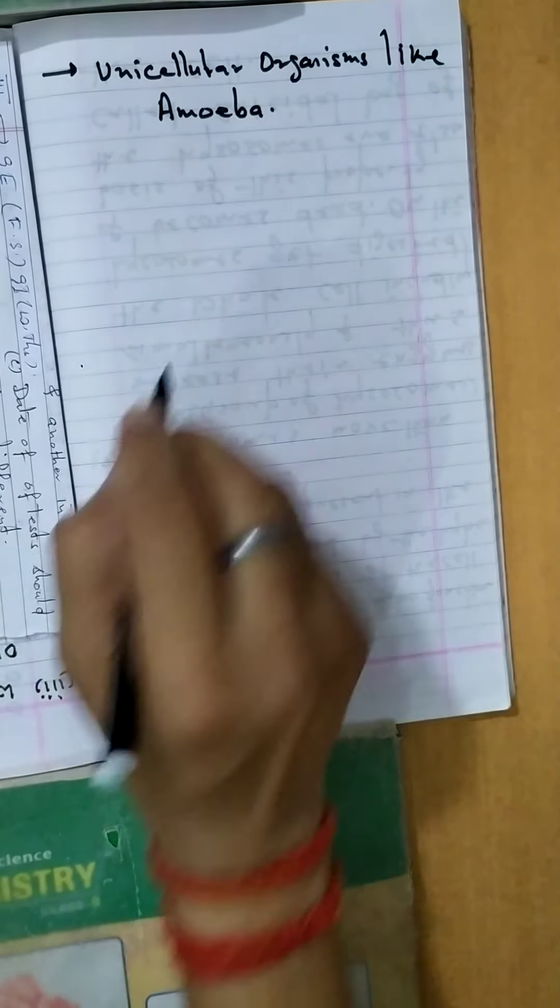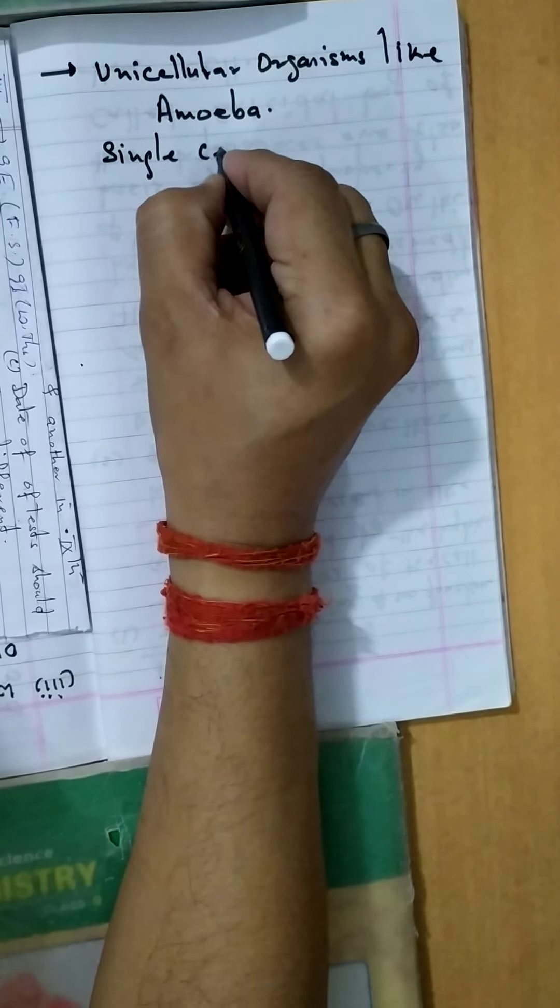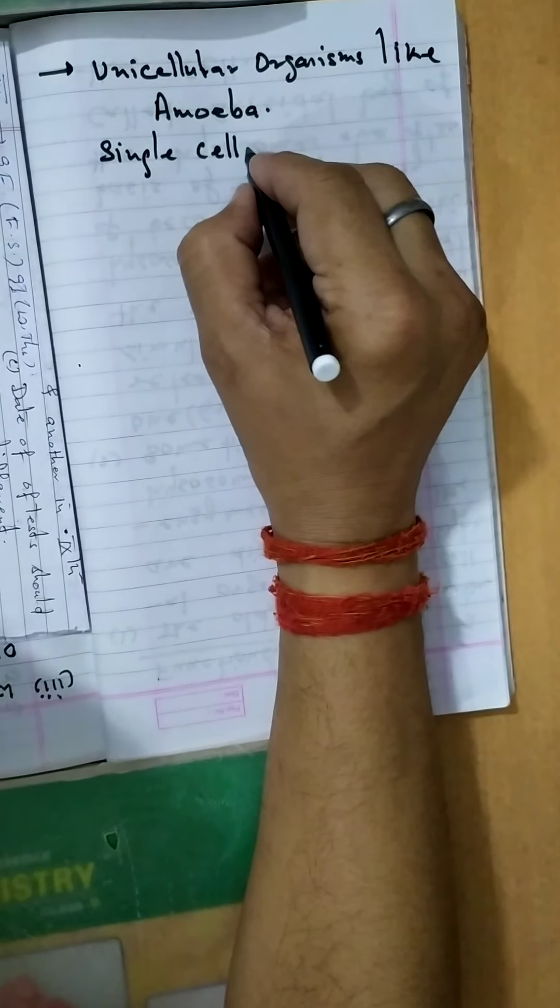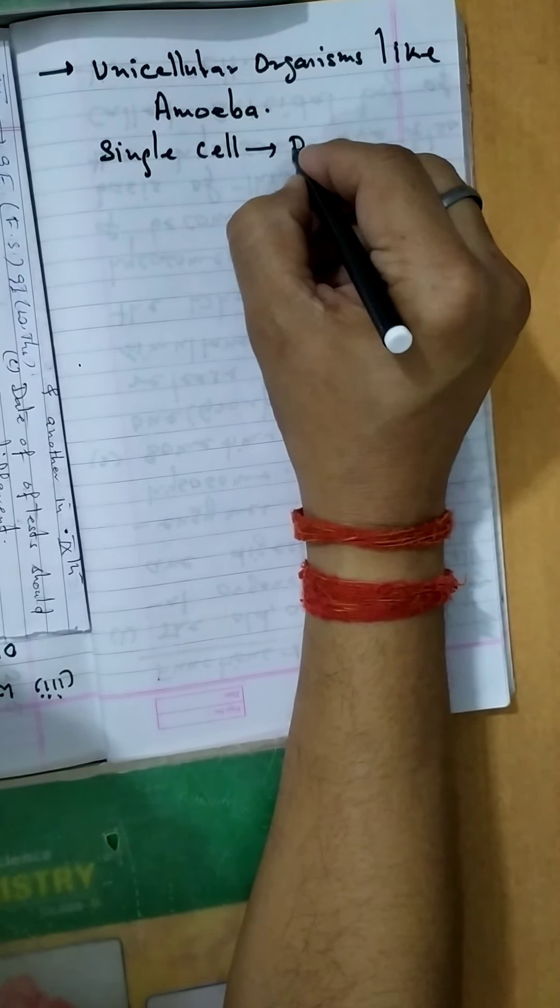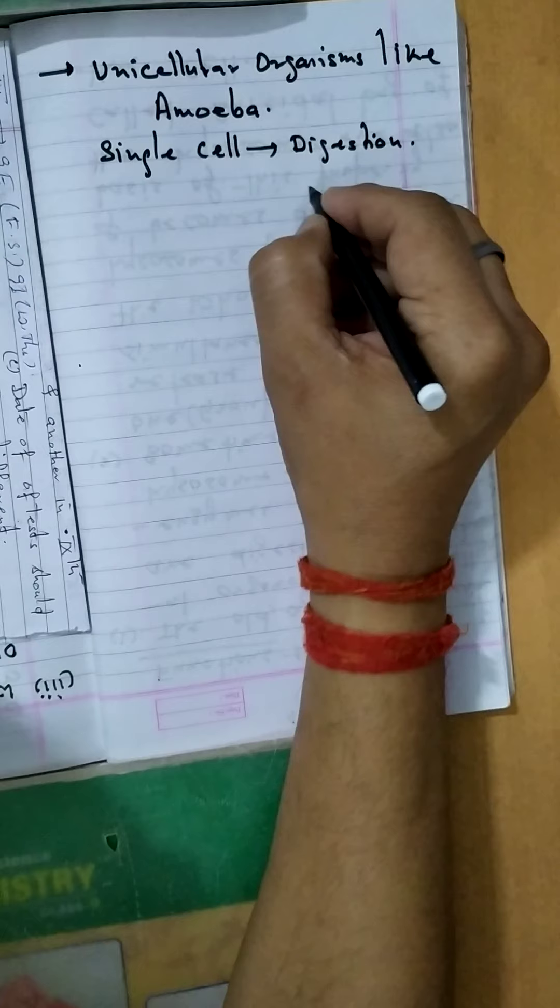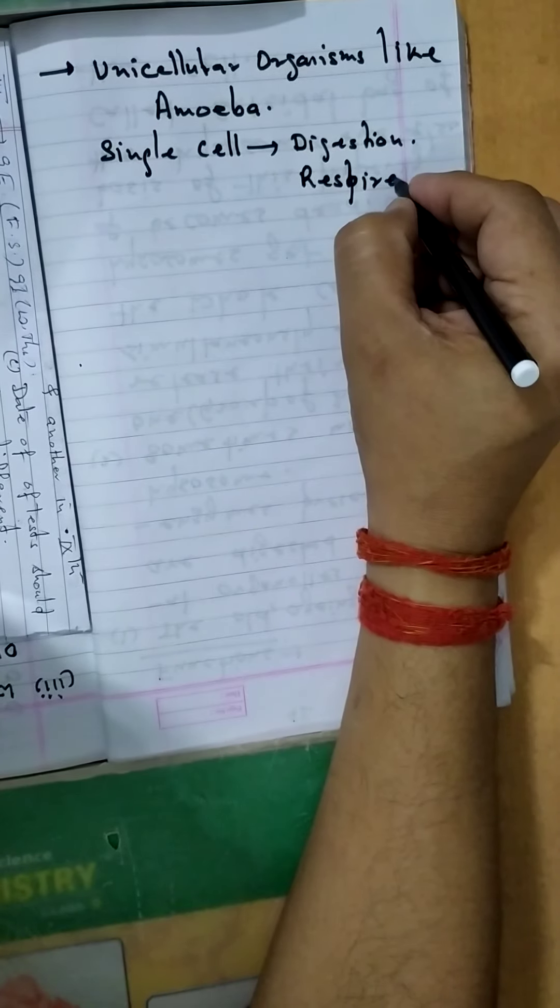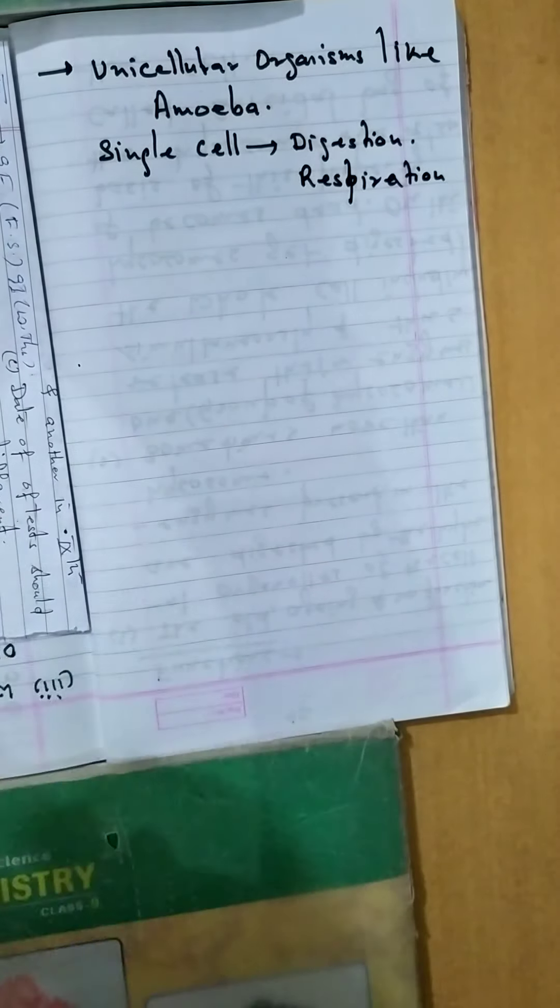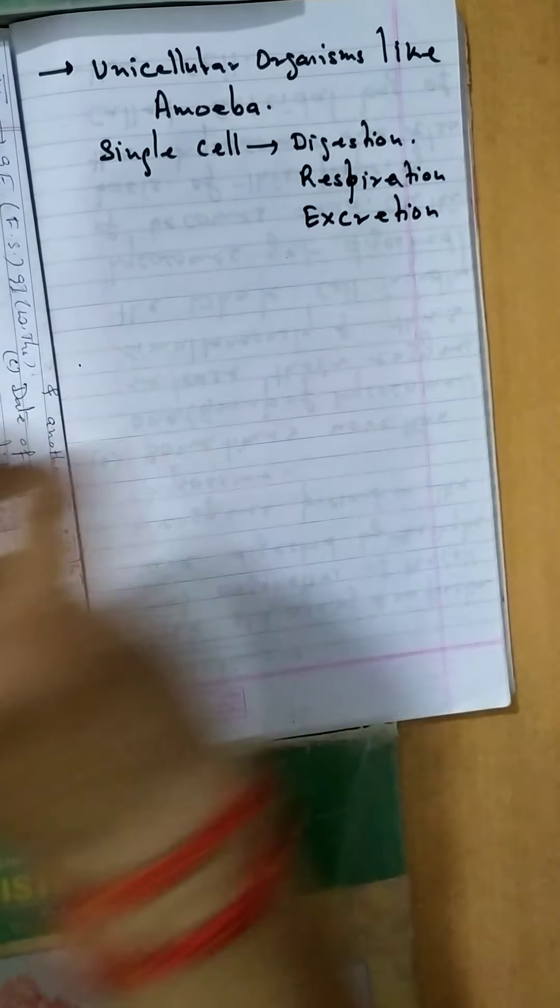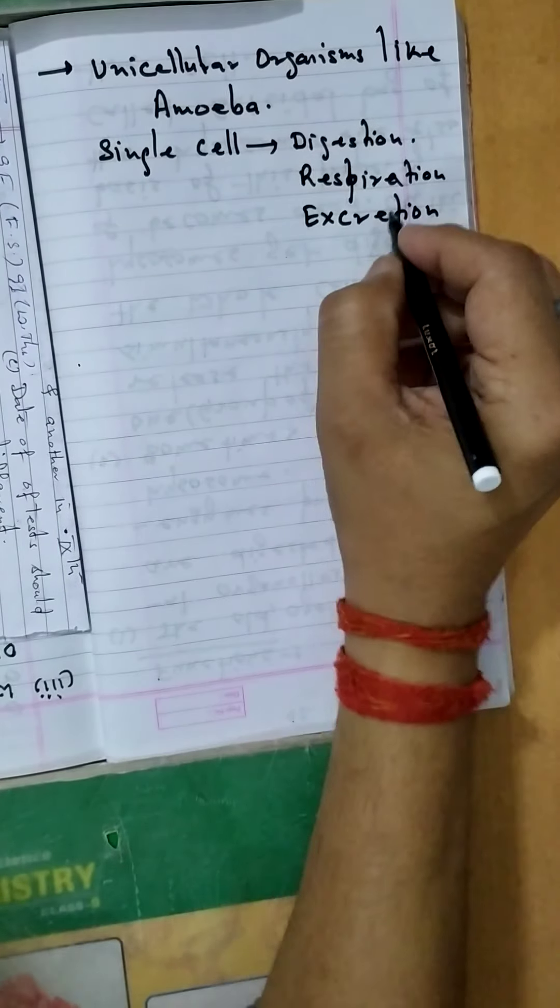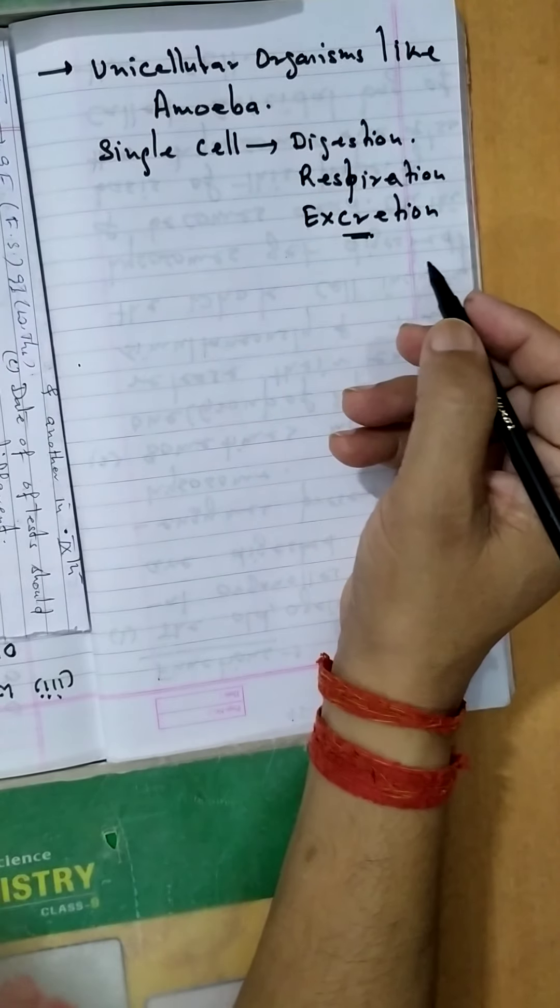In amoeba, there is single cell, where all the activities like digestion, respiration, excretion, all these things take place within the single cell.